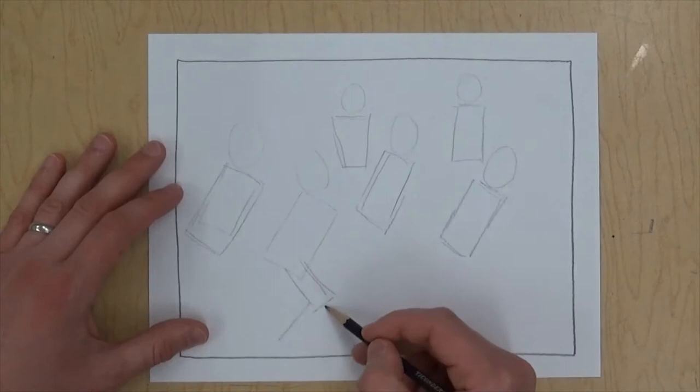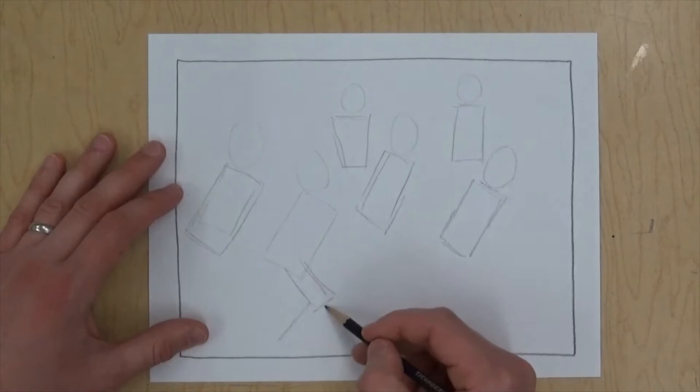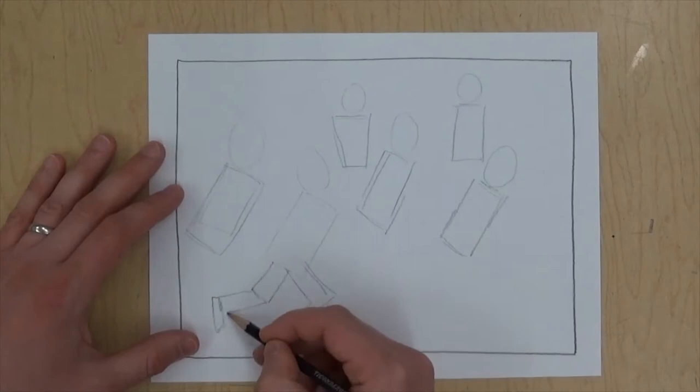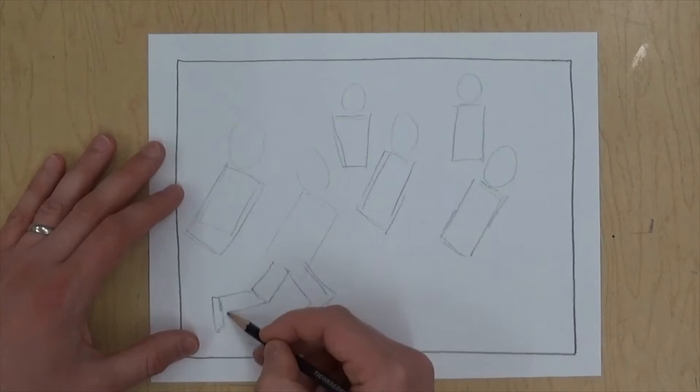Right now I'm just going around to every place that there's a head and I'm putting a body under it, or the torso, that's just a rectangle. So this is a person running too I think. I decided what I wanted to draw and then I'm just going to go through and put some shapes in to represent the bodies and the heads.